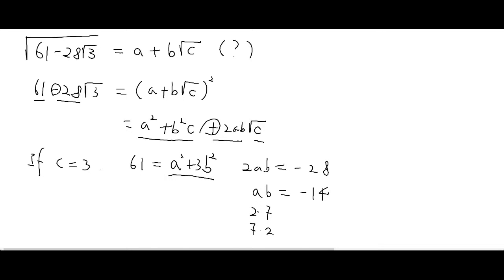Wait — could you do A = negative 14, and 2AB? Yes, that was considered. But you know 14 squared — what is 14 squared?